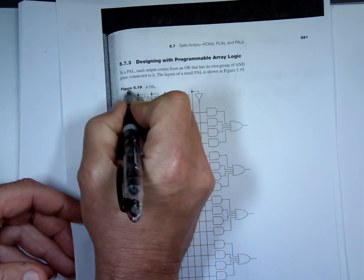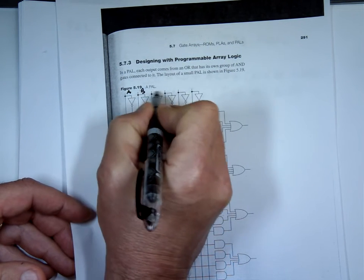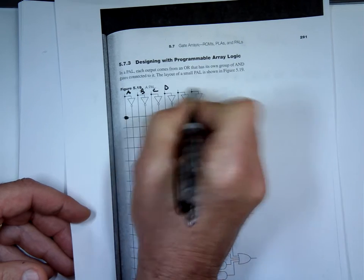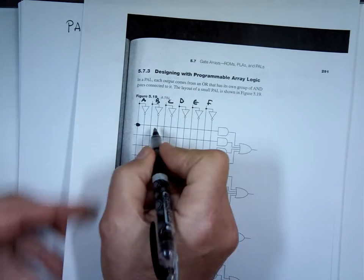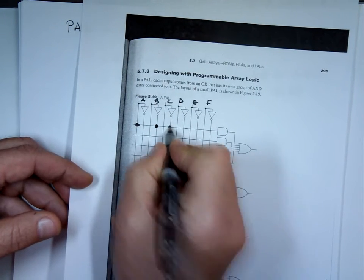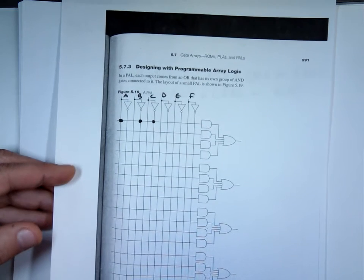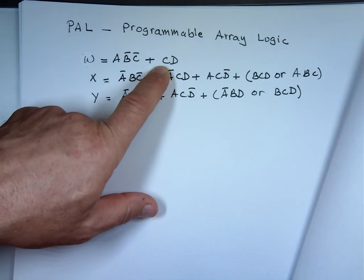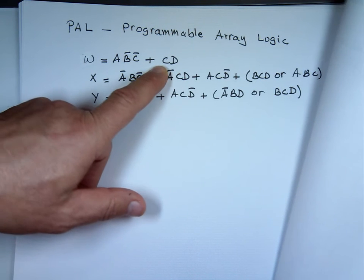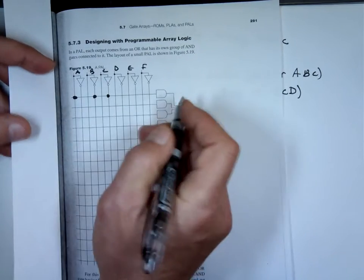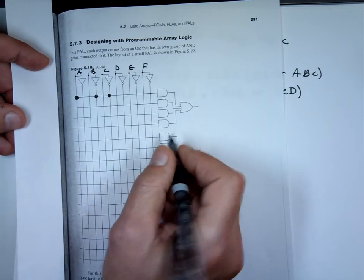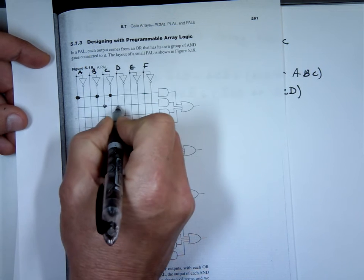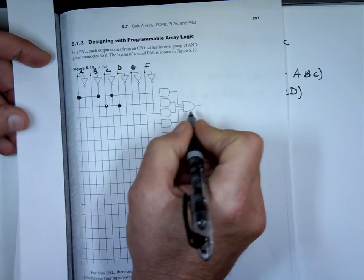The inputs are A, B, C, D — I'm not really using E and F. The first AND gate is A, B-bar, and C-bar. The second one is C and D. So that is my W output.